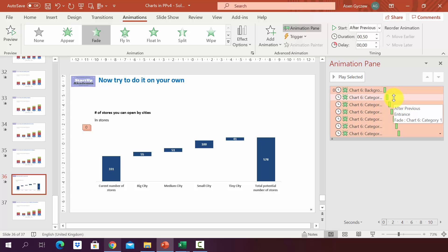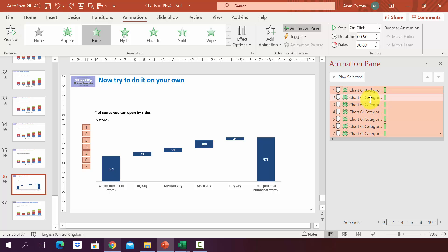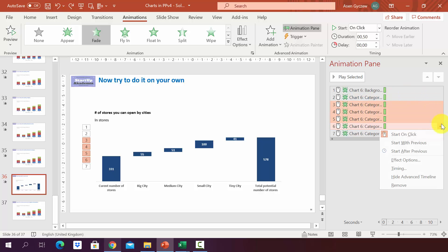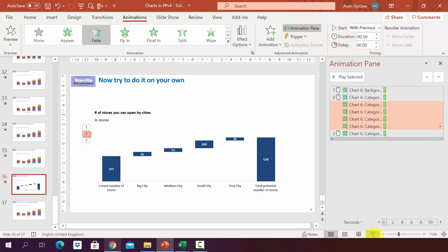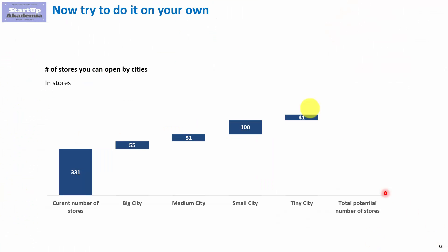So you can, for example, discuss the subject in the meantime. As mentioned, we can also group elements, so some of them appear at the same time. For example, if we want the internal ones to appear at once, then when you press, the first five will appear together and then the last one.